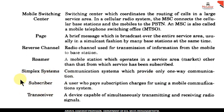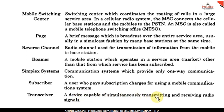Finally, the term is transceiver. Transceiver means a device capable of simultaneously transmitting and receiving radio signals — it can both transmit and receive signals. Those are the different terms used in mobile and wireless radio communication systems.